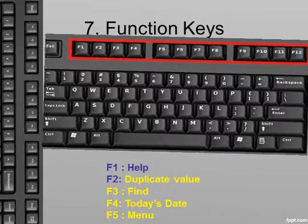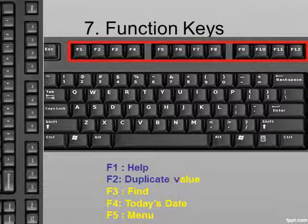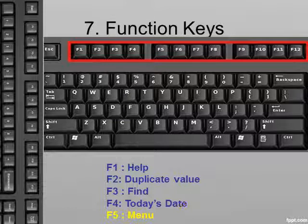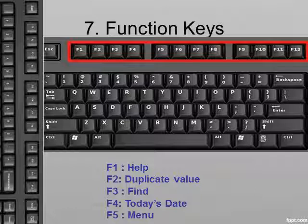Function keys are present above the number keys on the keyboard, ranging from F1 to F12. Each key has a specific function. For example, F1 is used for help, F2 is used for duplicate value, F3 is used for find, F4 for today's date, and F5 for menu, etc.